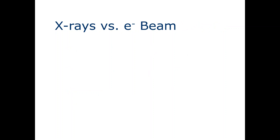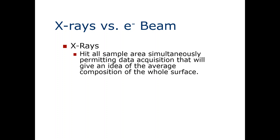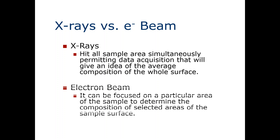How do we differentiate X-rays from electrons in XPS? X-rays illuminate the whole sample area simultaneously, giving an average composition of the whole surface. Unlike that, an electron beam can be focused on a particular area of the sample and is used to determine the composition of selected areas of the surface.